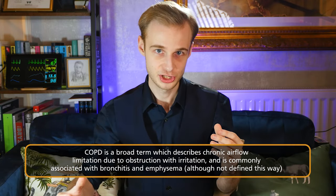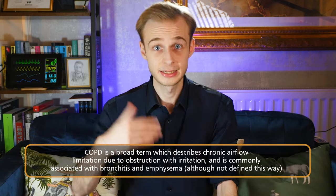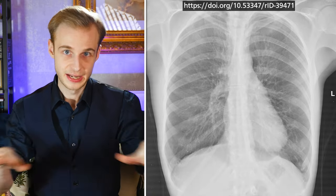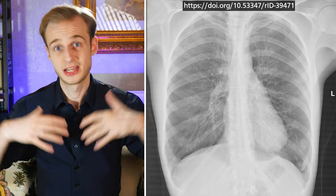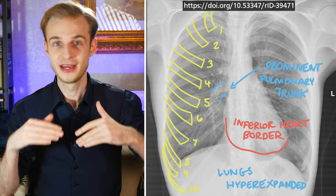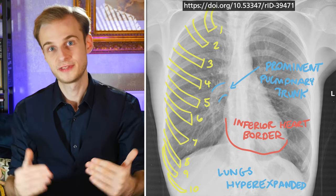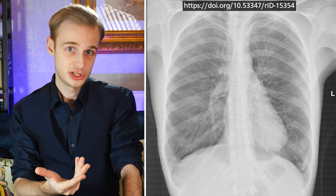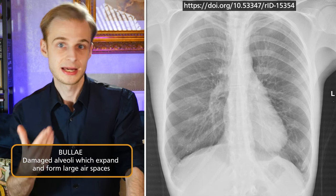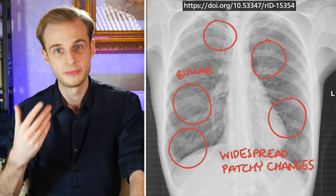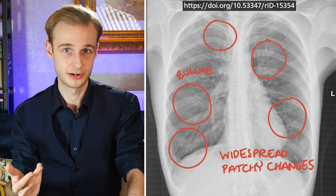COPD is chronic airflow limitation linked with persistent inflammation of the airways, classically associated with bronchitis and emphysema. It has some key reliable signs on chest x-ray, including a very flattened diaphragm due to hyperexpansion of the chest and over-inflation of the lungs, so you'll see more anterior ribs than normal. If it becomes extreme enough, you may see the floating heart sign, where the expansion of the chest is so significant that you can actually see the inferior border of the heart muscle. Another feature to look out for is bullous emphysema — patchy areas of reduced density with thinning of the pulmonary vessels, more likely to appear in the upper lobes.